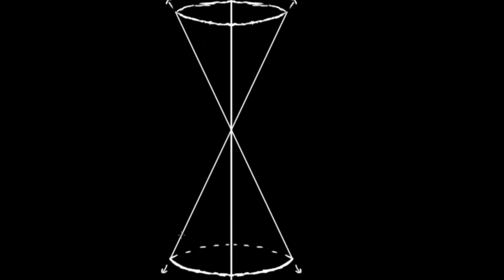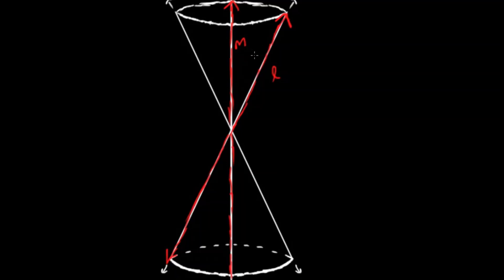Here is a double-naped cone. It is two cones specifically that share a vertex. This cone is actually created by taking a line L and an axis of symmetry M, and rotating L around that axis of symmetry, thus creating a cone. Because it is a line, we create two cones that have a shared vertex, and these cones go in the upper and lower directions forever — this is an infinitely large set of cones. We call this a double-naped cone.